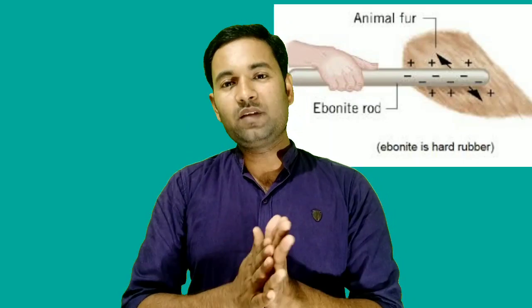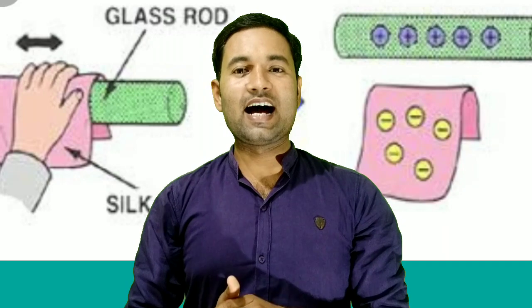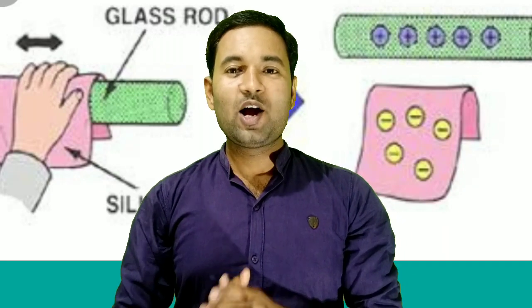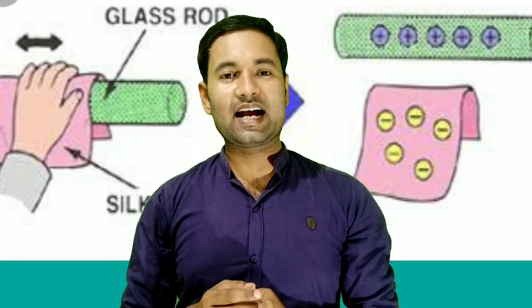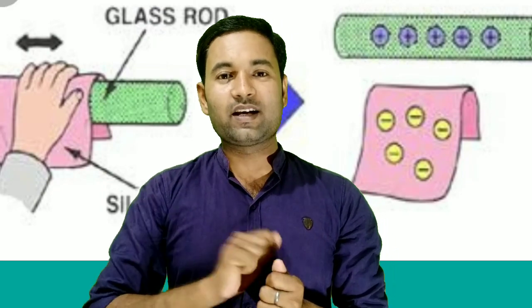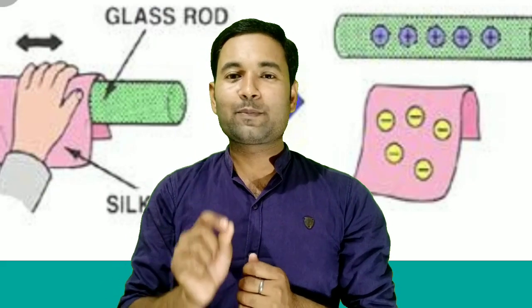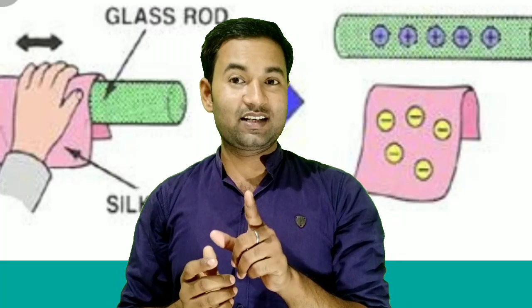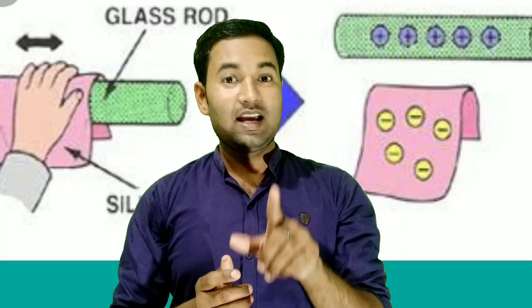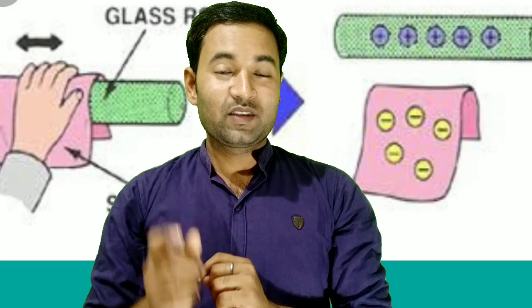Now we know about two types of charges. Now we talk about why the glass rod gets a positive charge. When we rub the glass rod, electrons accumulate and leave the glass rod. As electrons leave, the number of protons increases relative to electrons, so the glass rod gains a positive charge.